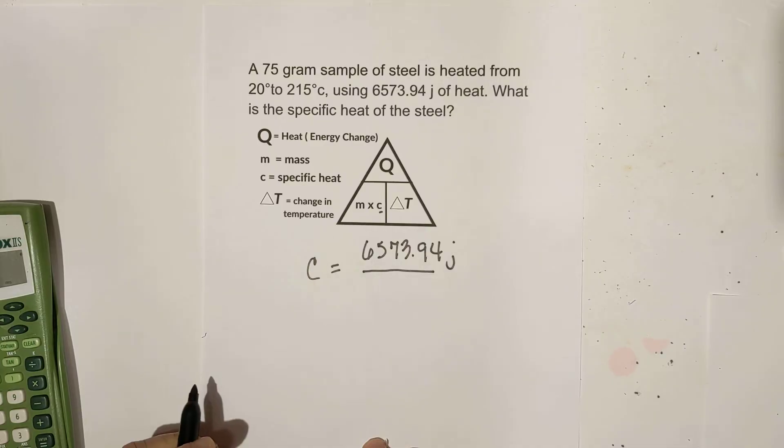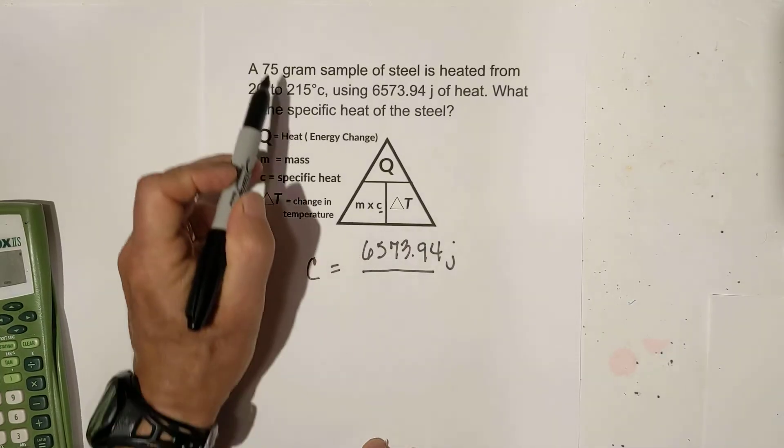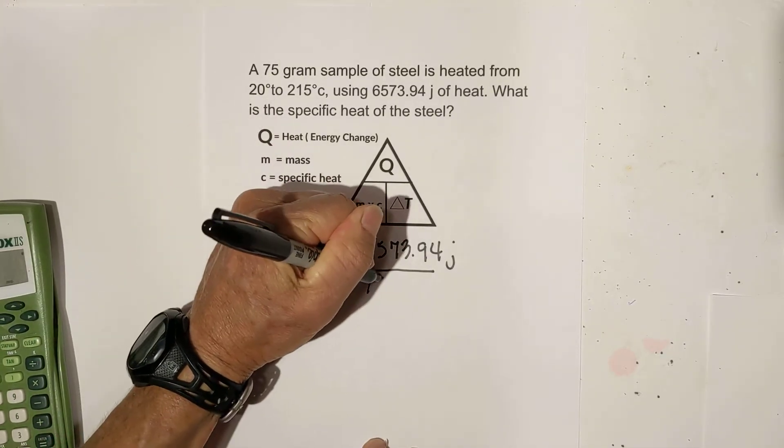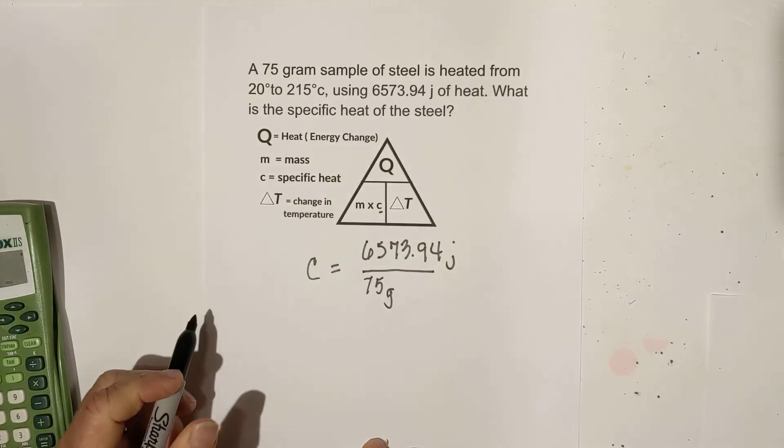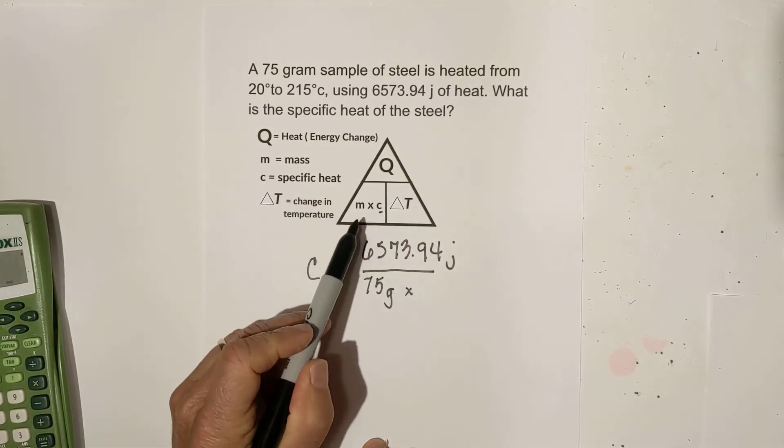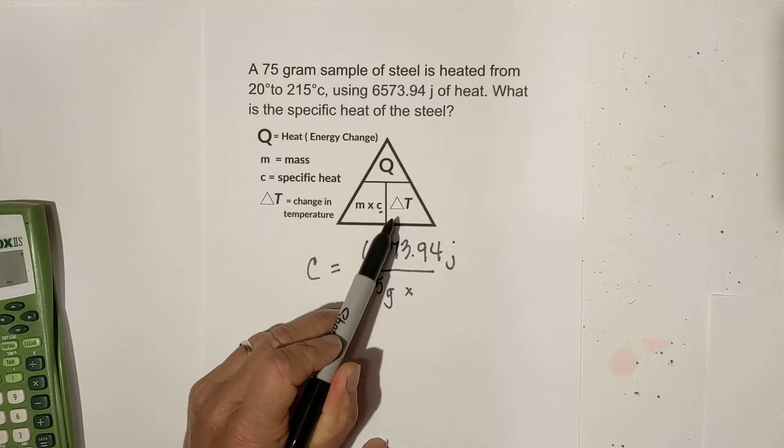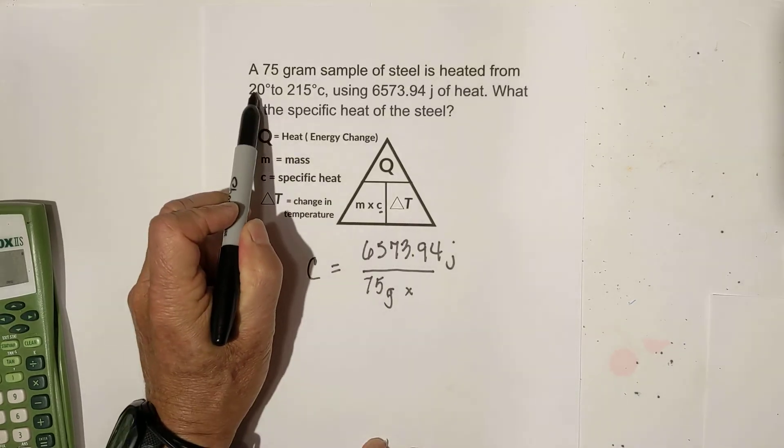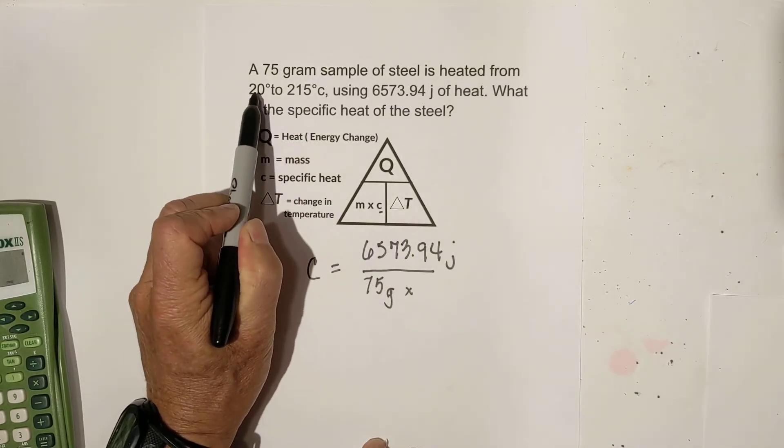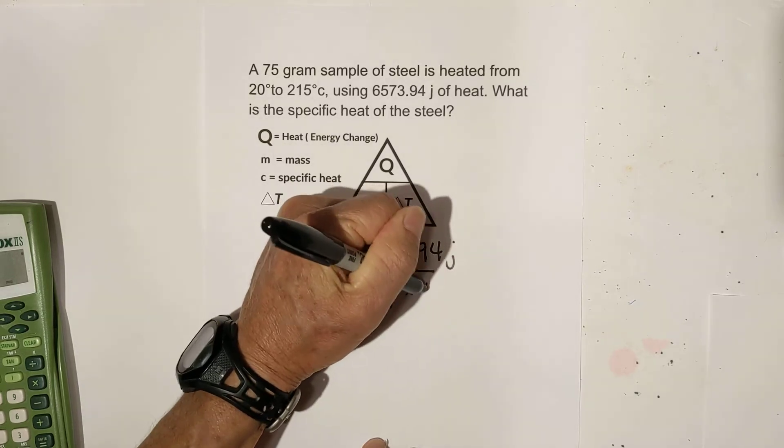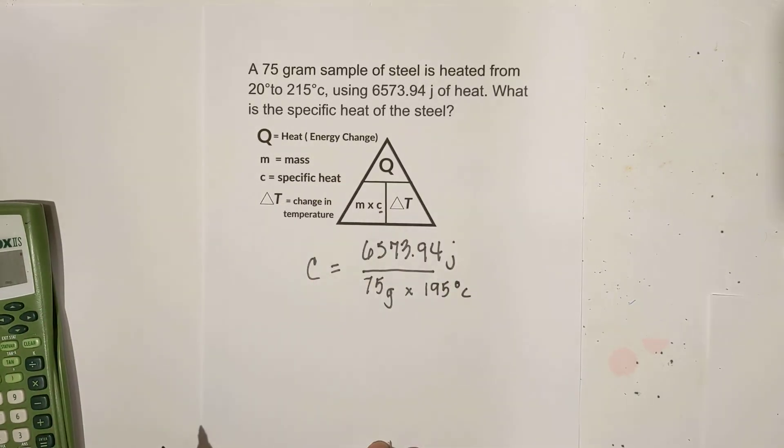And then over, let's see what we have. We know that we have a mass of 75 grams and we're looking for specific heat. But what's the change in temperature? Well, it went up 195 degrees because it went from 20 to 215. And it looks like that's in Celsius.